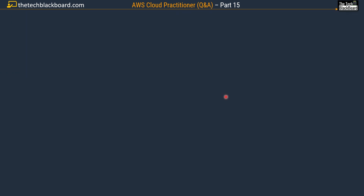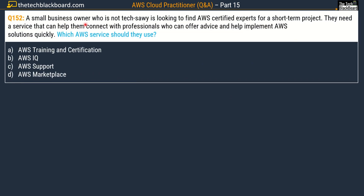Question number 152 is a really interesting question. A small business owner who is not tech-savvy is looking to find AWS certified experts for a short-term project. They need a service that can help them connect with professionals who can offer advice and help implement AWS solutions quickly. Which AWS service should they use? Options are: option A, AWS Training and Certifications; option B, AWS IQ; option C, AWS Support; and option D, AWS Marketplace. The correct answer is option B, AWS IQ.